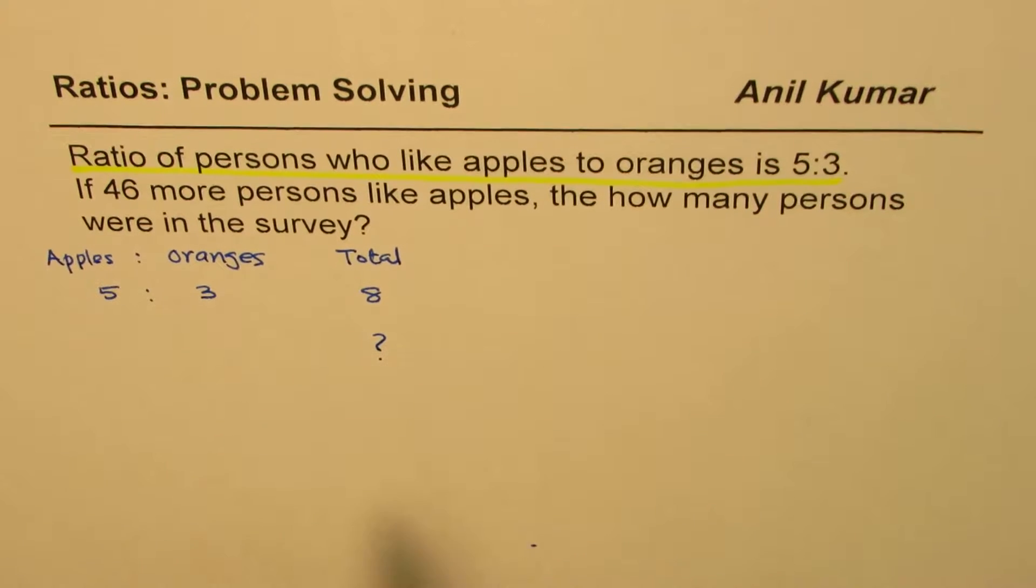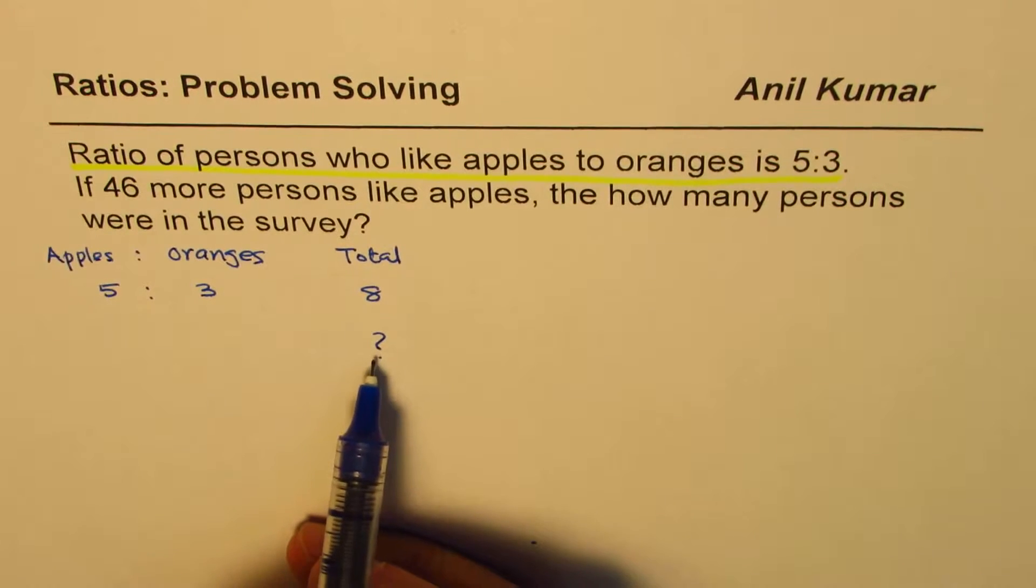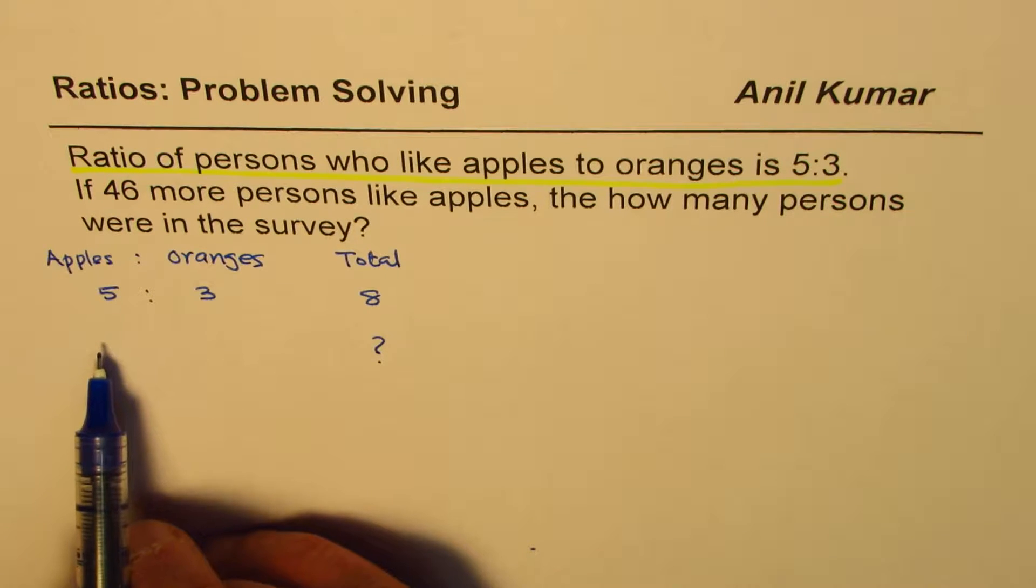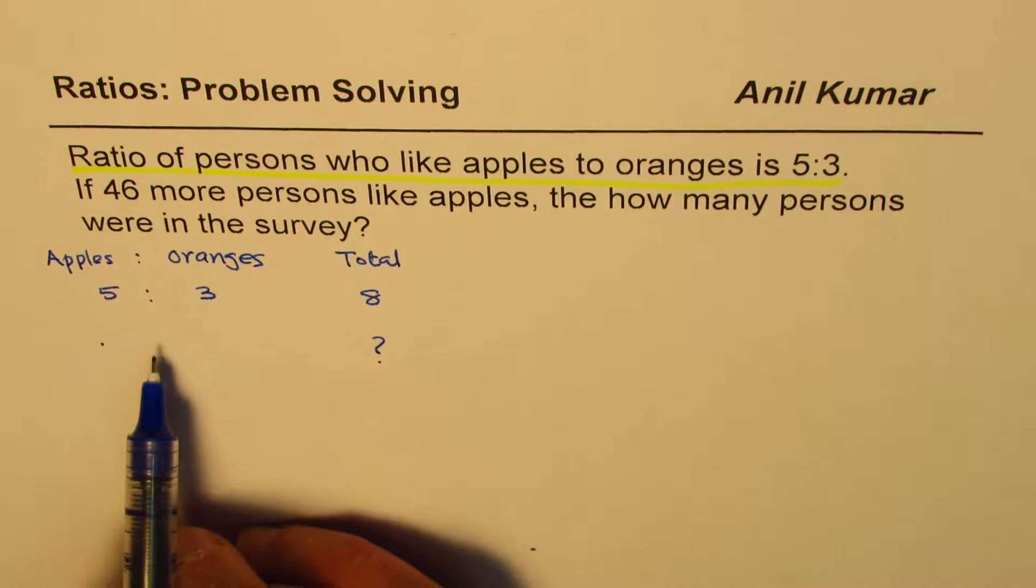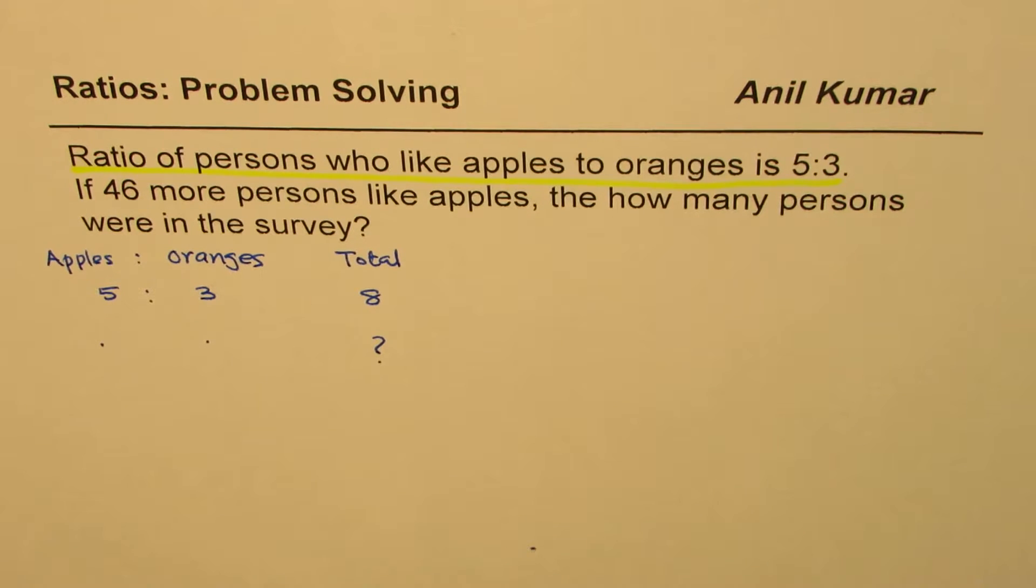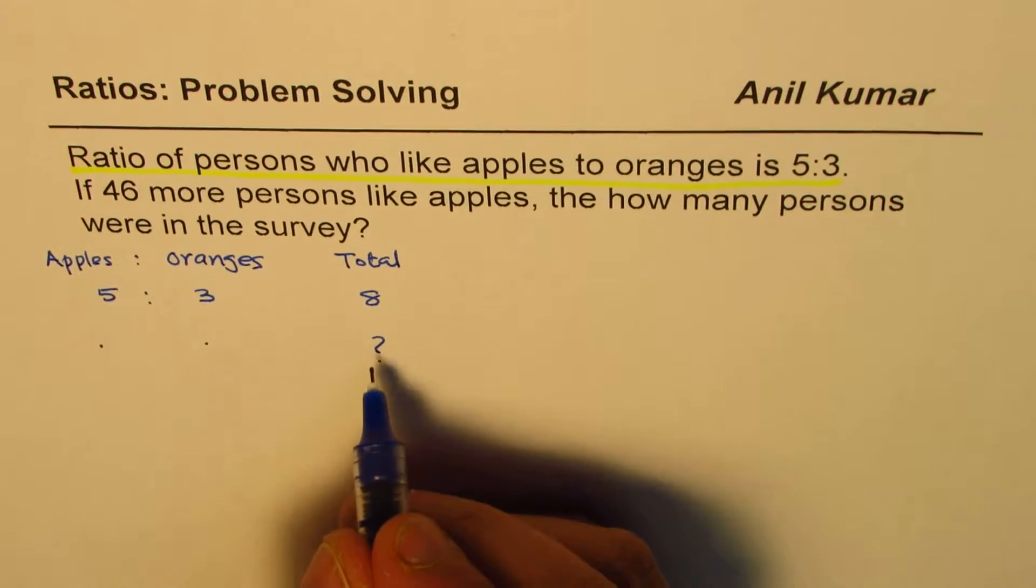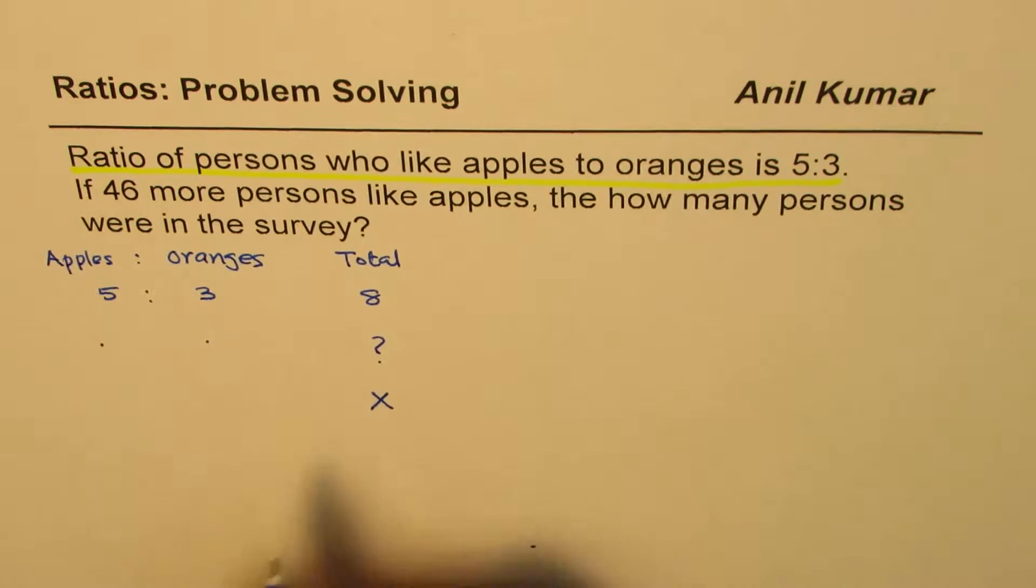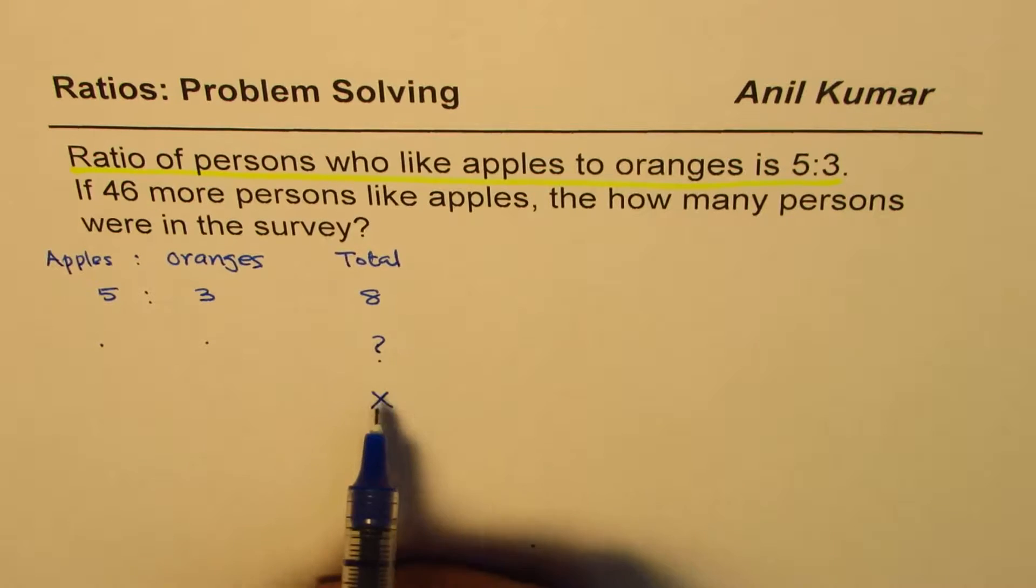That means we have to find how many persons were here so that persons who like apples take away oranges is 46. And we don't know this number. So we say let this number be X.